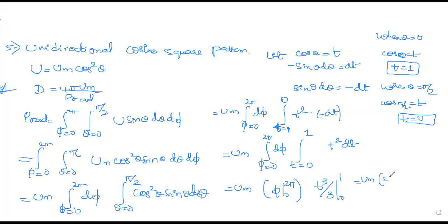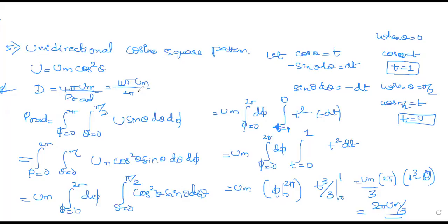Substituting into the directivity formula: D = 4πUm / (2πUm/3) = 4πUm·3 / (2πUm) = 12/2 = 6. So the directivity of the unidirectional cosine square pattern is 6.